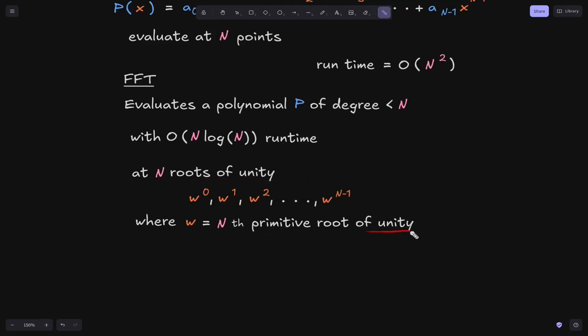Denote w as the Nth primitive root of unity. Then we need to evaluate the polynomial P at w raised to the power of 0, w raised to the power of 1, w raised to the power of 2, and so on, all the way up to N minus 1. Now don't worry if you don't know what the roots of unity or the Nth primitive root of unity is. I'll explain this in the next video. All you have to know for now is that to use FFT, you'll need to evaluate the polynomial P at special points, and these special points are the Nth roots of unity.